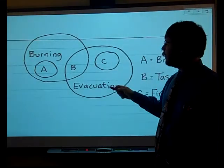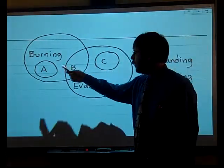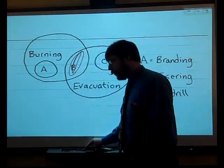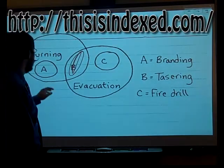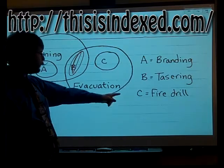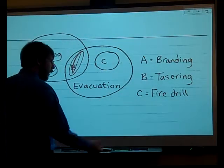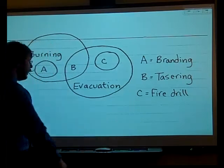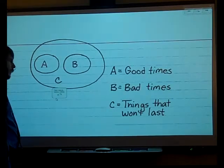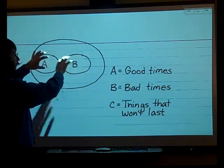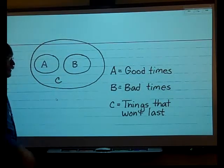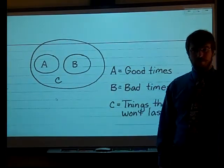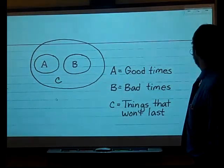You can also have Venn diagrams that look like this. You've got Burning and Evacuation. There's A and C that fit within Burning and Evacuation, and then there's B which has both. These are all from the webcomic called the Index. So you've got Branding, and in Evacuation you have Fire Drill. But if you combine Branding and Fire Drill with Burning and Evacuation, that would be a tasering. Here's a Venn diagram where A and B are separate from each other but have something in common — C. A are the good times, B are the bad times. What do they both have in common? They won't last.